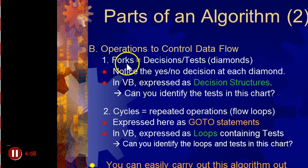Okay? Can you identify the tests in this chart? So this one and this one and so on. Cycles, repeated operations, flow loops, expressed here as go-to statements. And here's a go-to statement. And that's a kind of loop. And we'll learn about loops also, how to make your program repeat something over and over again until something happens.